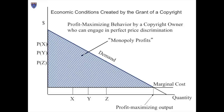What we've just illustrated is profit-maximizing behavior by a copyright owner who can engage in so-called perfect price discrimination — that is, differentiate perfectly among buyers, charging each one the maximum amount they would be willing to pay. Now, as you can imagine, this never happens. Perfect price discrimination is impossible. For now, let's assume that CDF doesn't have good information about their consumers and thus cannot discriminate at all — in other words, CDF will charge the same price for every copy of the DVD.